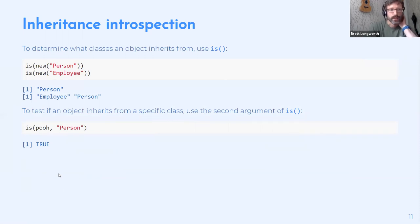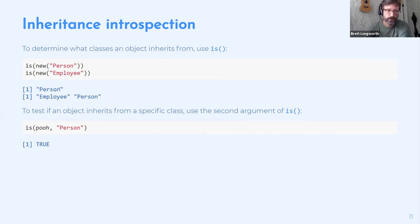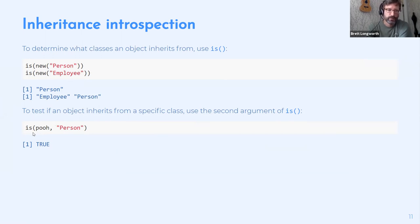You can check which classes an object inherits from using the `is()` function. For a `new Person`, it returns just `Person`. For a new `Employee` instance, it returns both `Employee` and `Person`. You can also test with `is(object, 'Person')` — for example checking if a new `Employee` is of class `Person`.